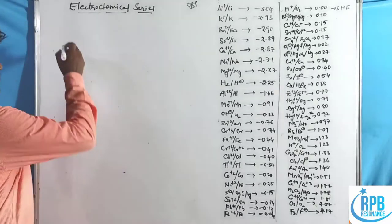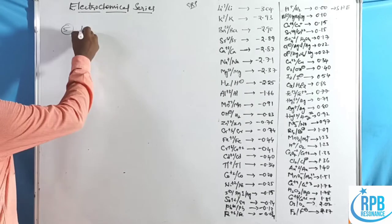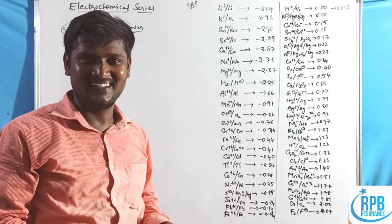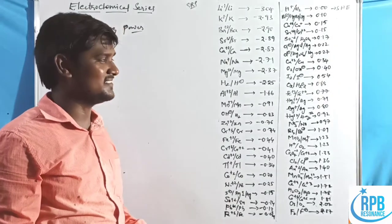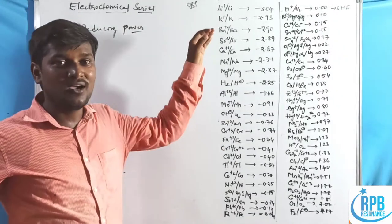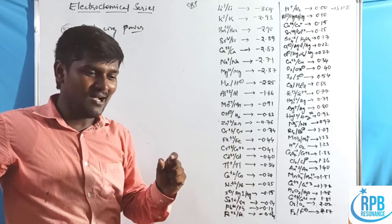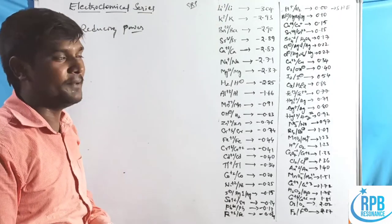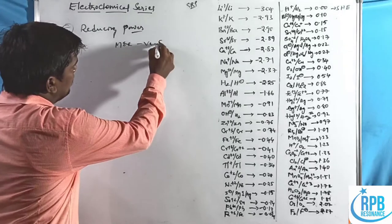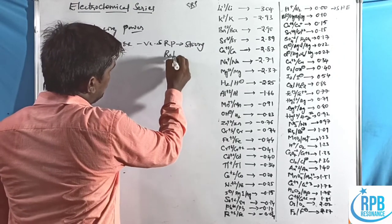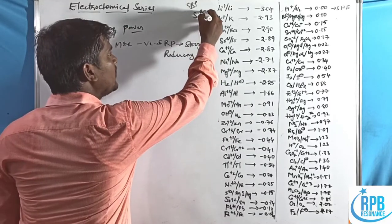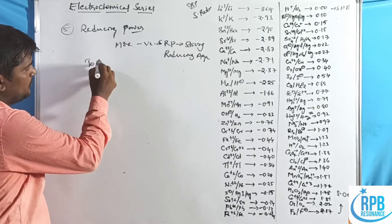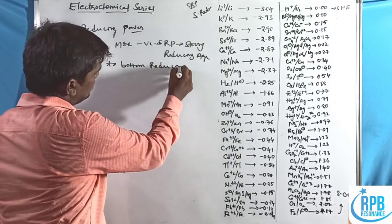The fifth application is reducing power. Top to bottom, electron-losing character decreases, so anodic character and oxidation tendency decrease. Metals at the top with more negative SRP values have stronger reducing character — they oxidize themselves and reduce others. Therefore, more negative SRP equals a strong reducing agent. Top to bottom, reducing character decreases.